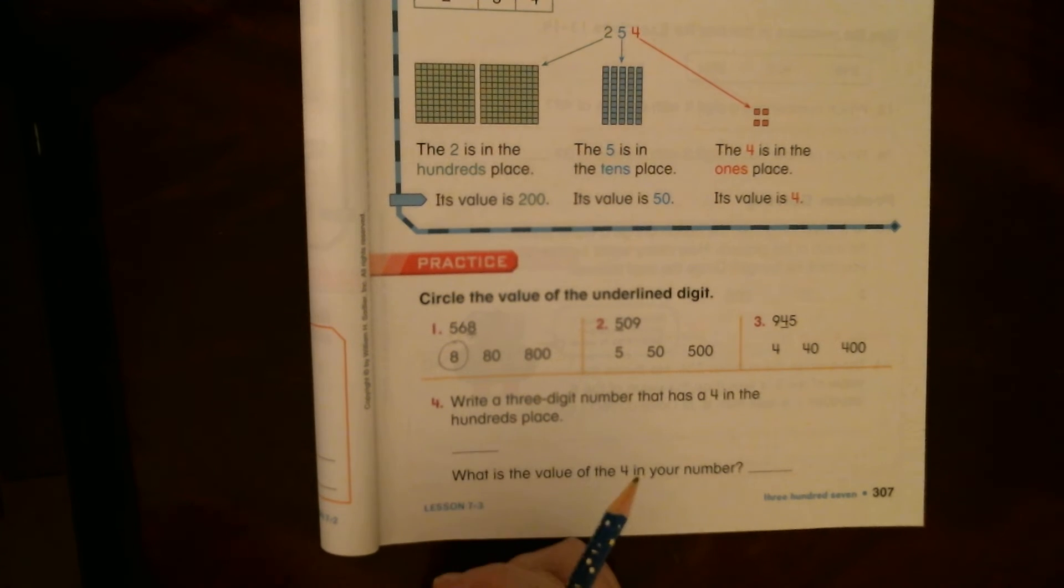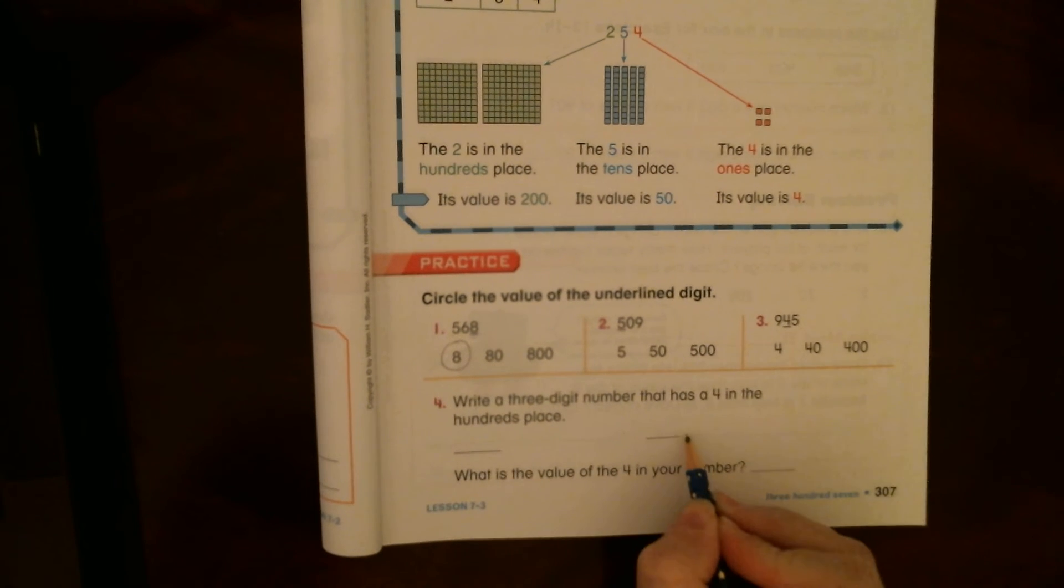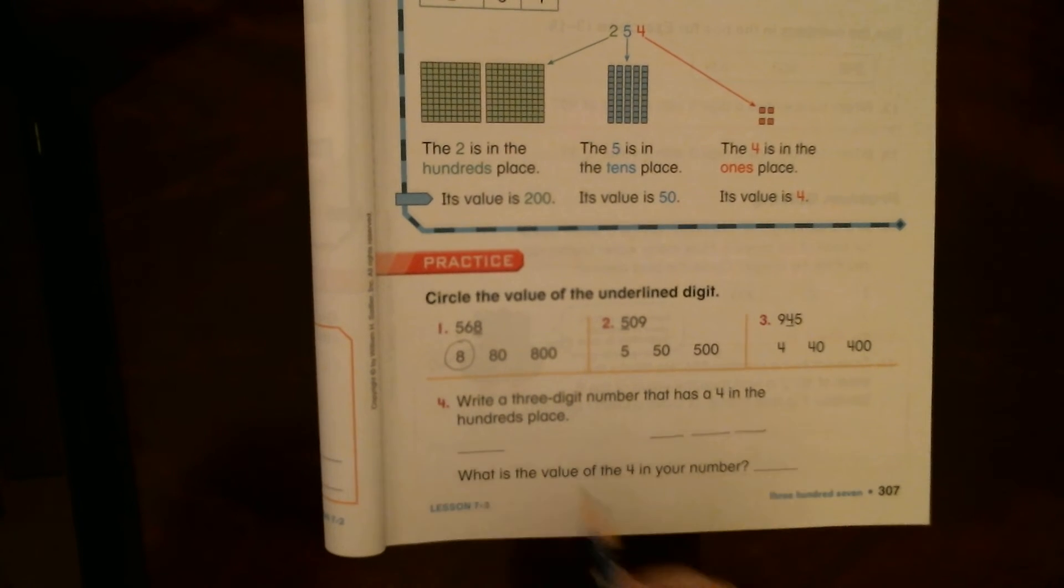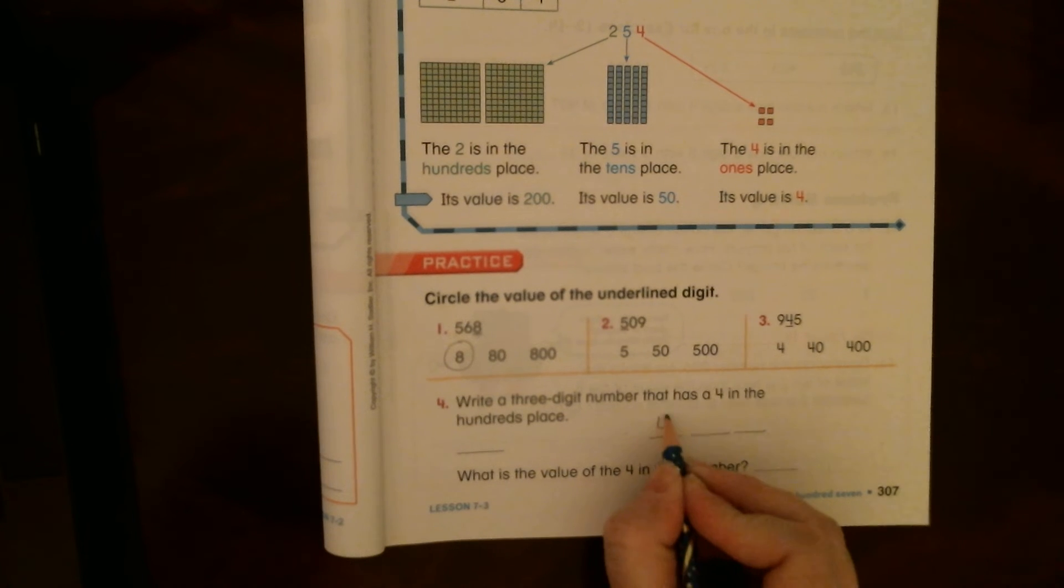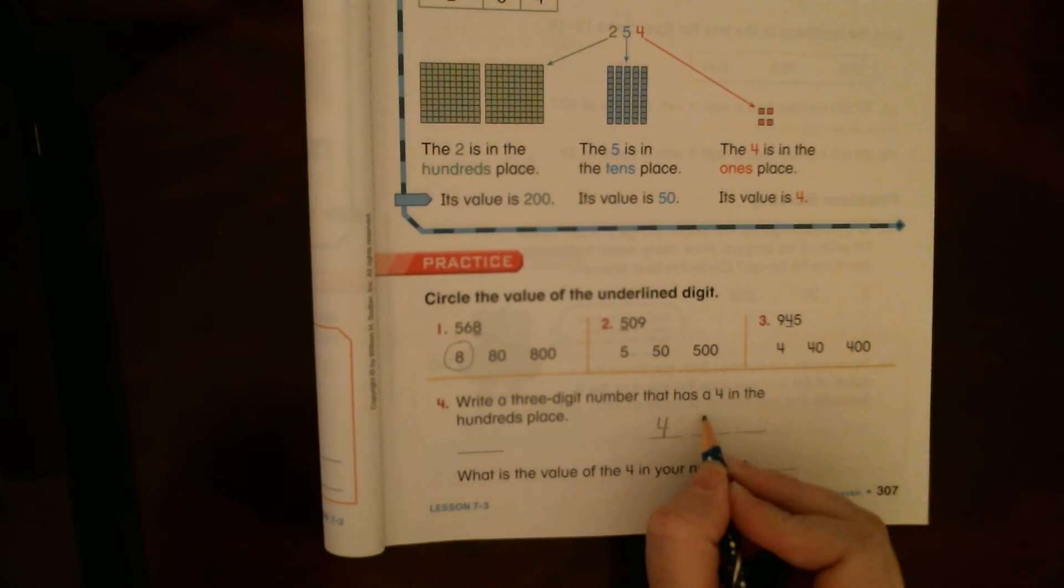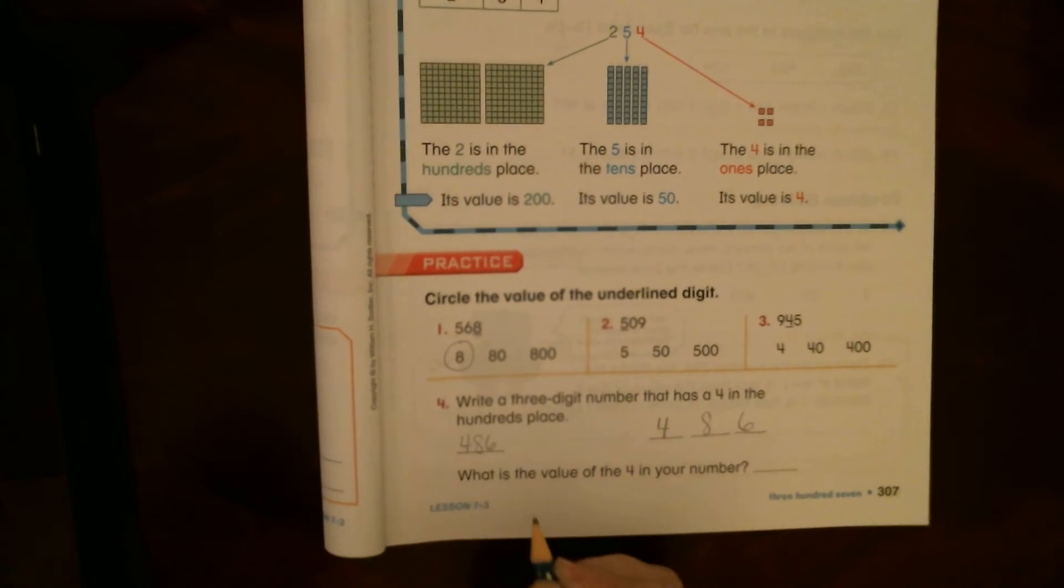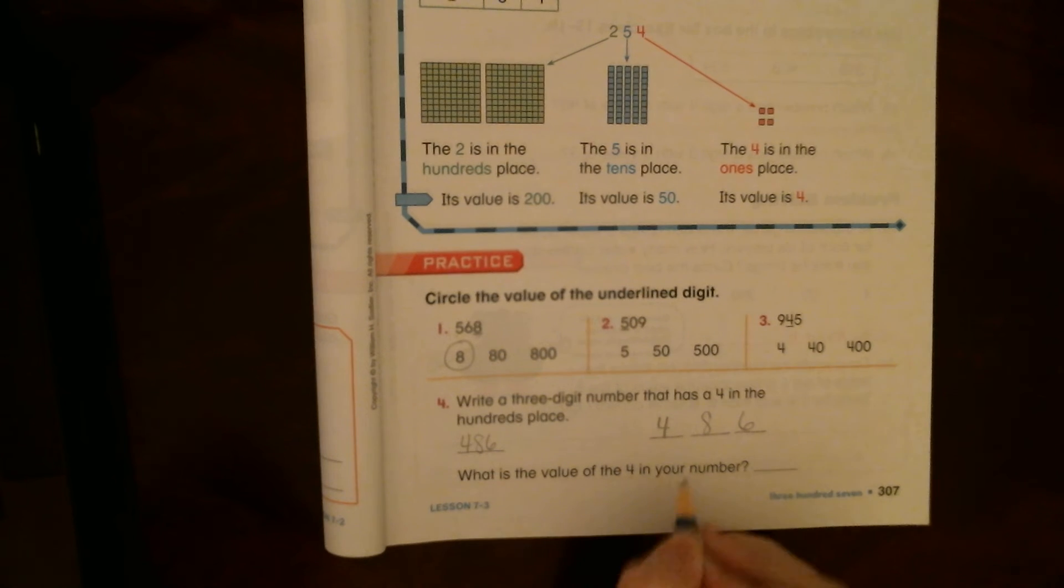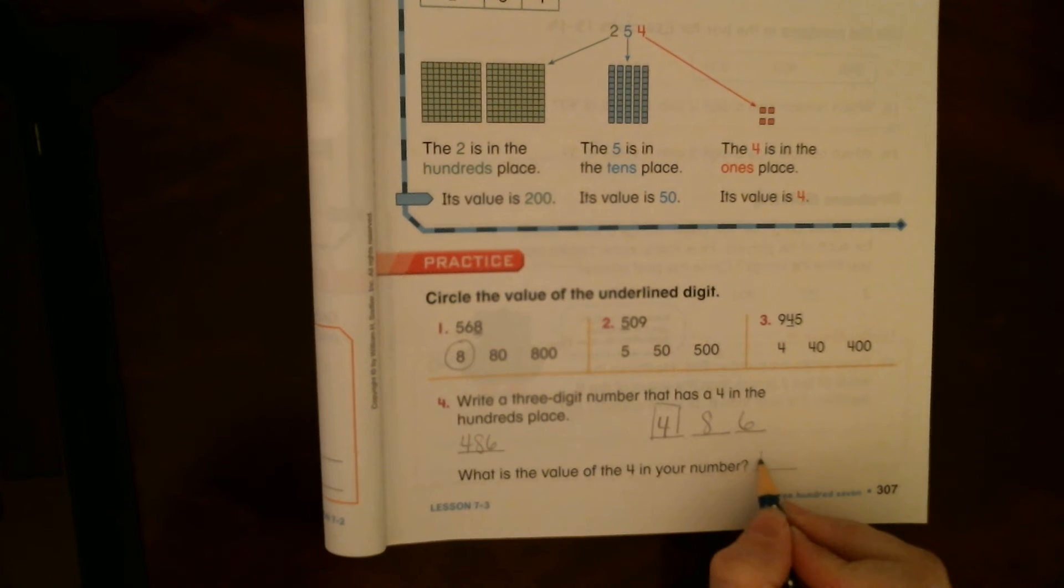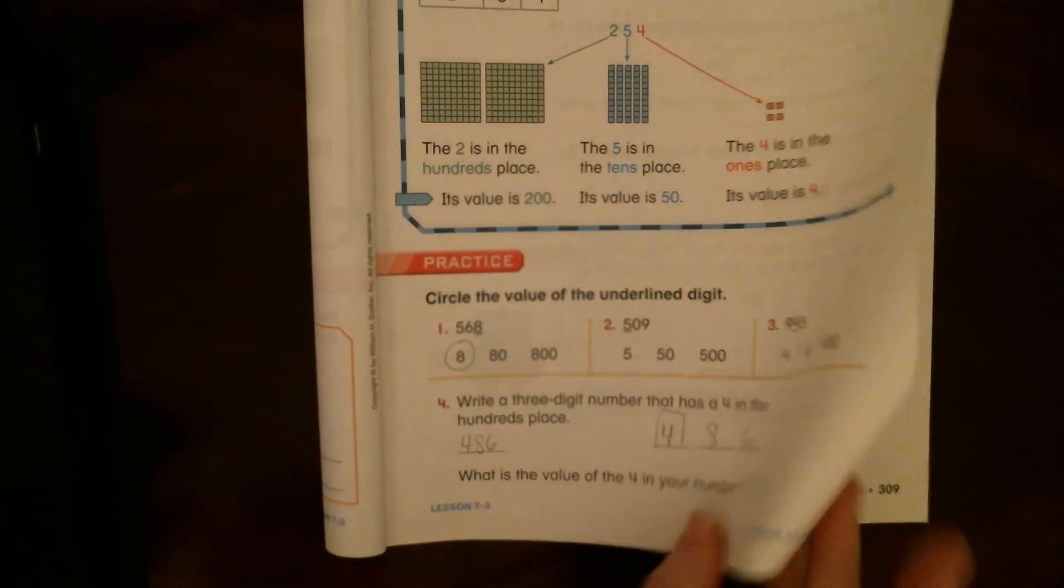Let's look at number four. Let's see if we can figure this out. Well, it says write a three-digit number. So that means it's going to have a hundreds, tens, and ones. That has a four in the hundreds place. And you can fill in the other numbers. You decide what you want the numbers to be. It might be, I might do 486. What is the value of the four in your number? So what is this four worth? It's in the hundreds place. So it's worth 400. Okay? All right, guys. So that's what you're going to work on.